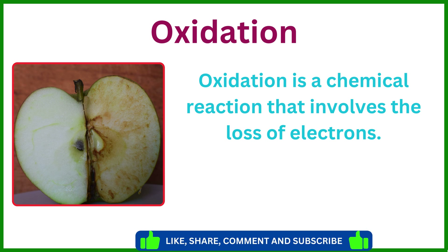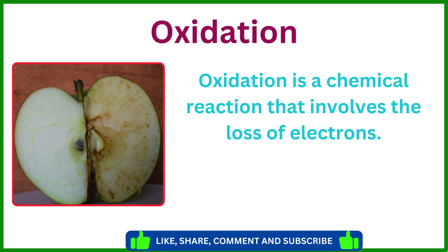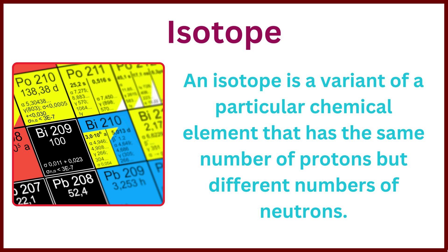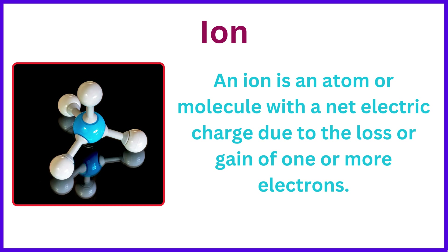Oxidation is a chemical reaction that involves the loss of electrons. Reduction is a chemical reaction that involves the gain of electrons. An isotope is a variant of a particular chemical element that has the same number of protons but different numbers of neutrons.